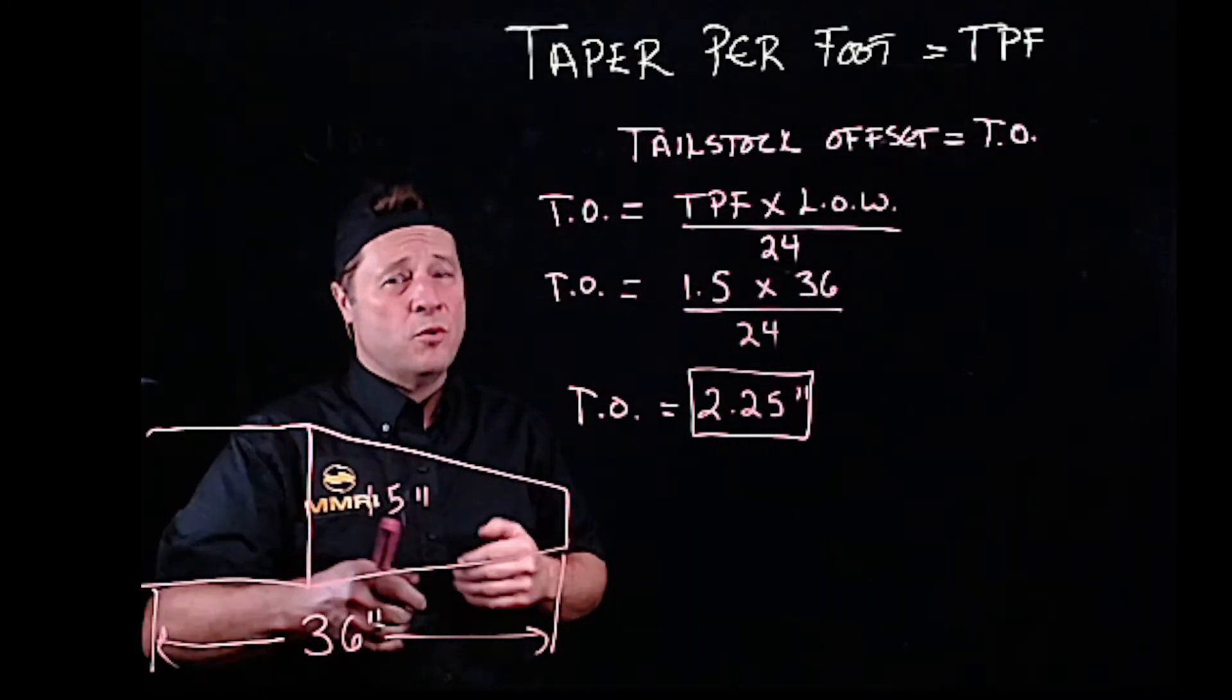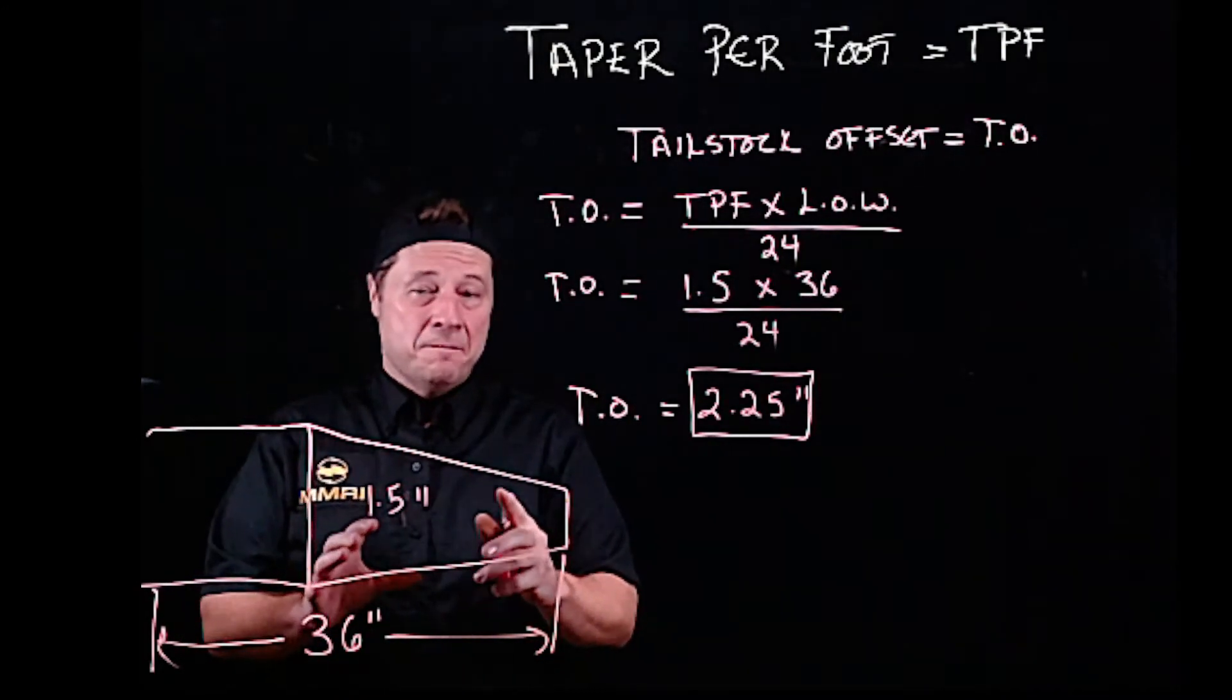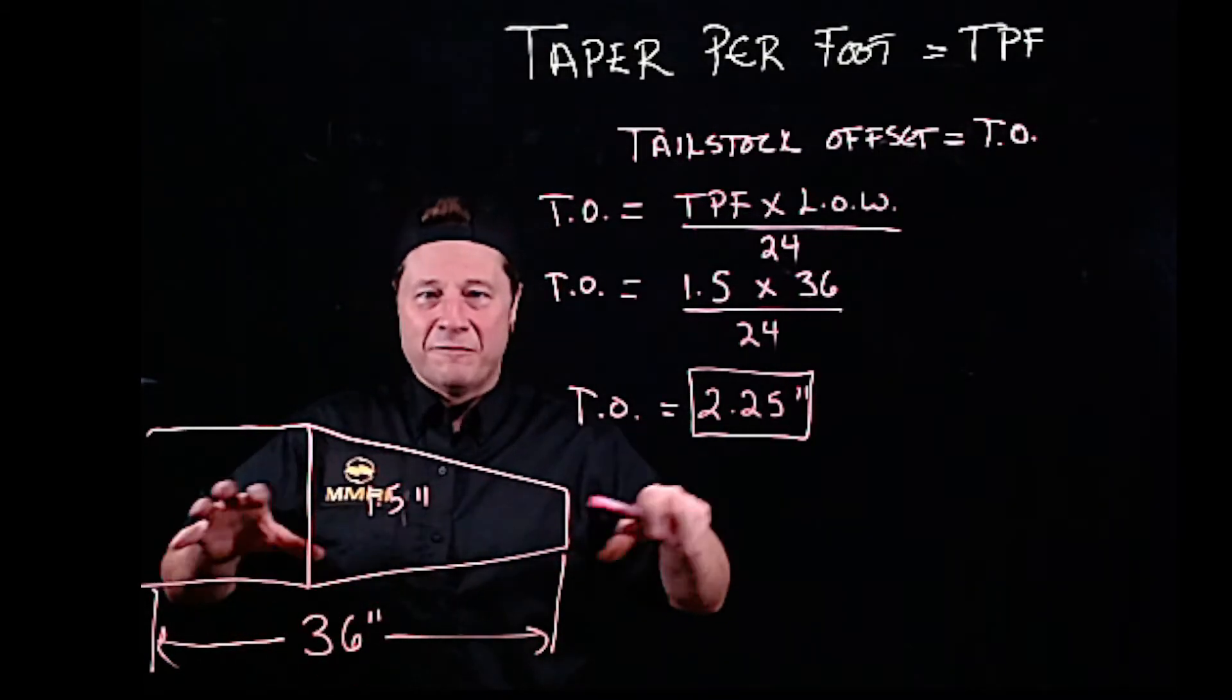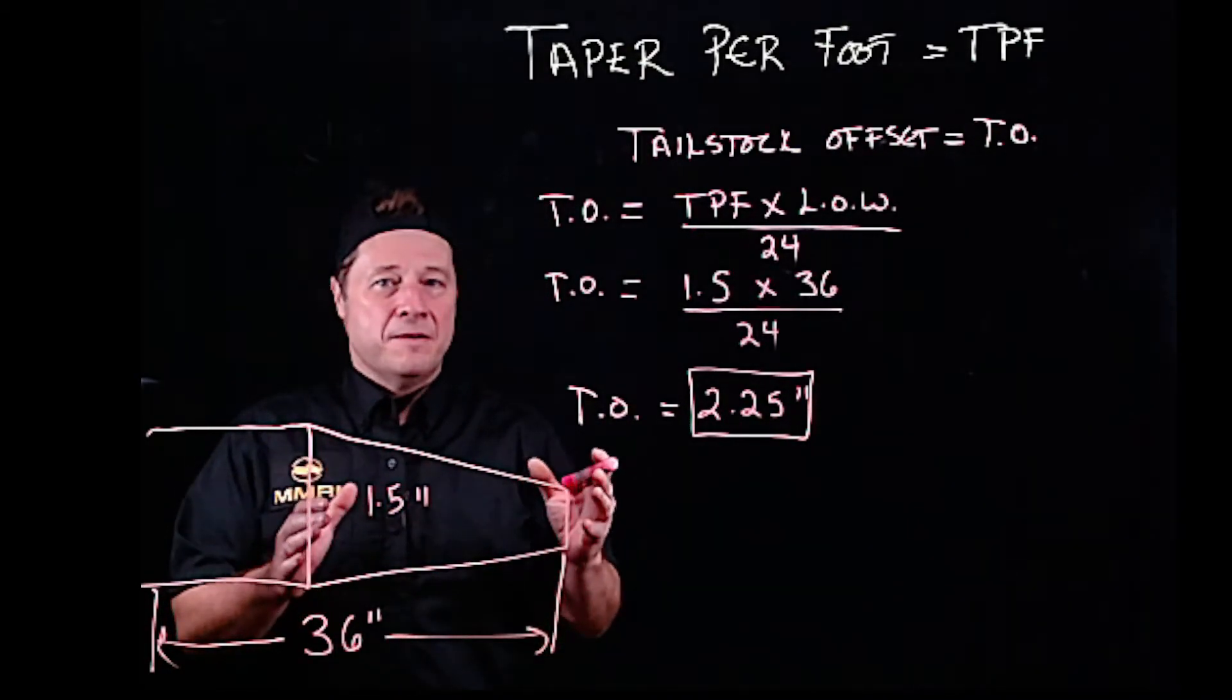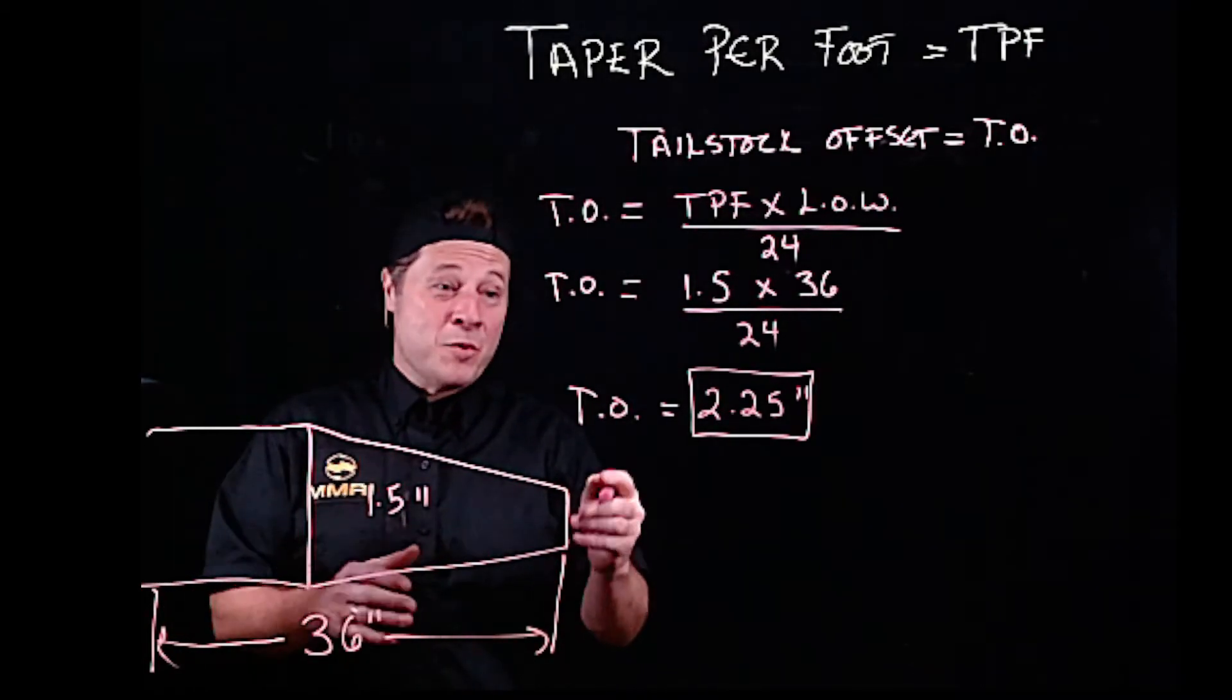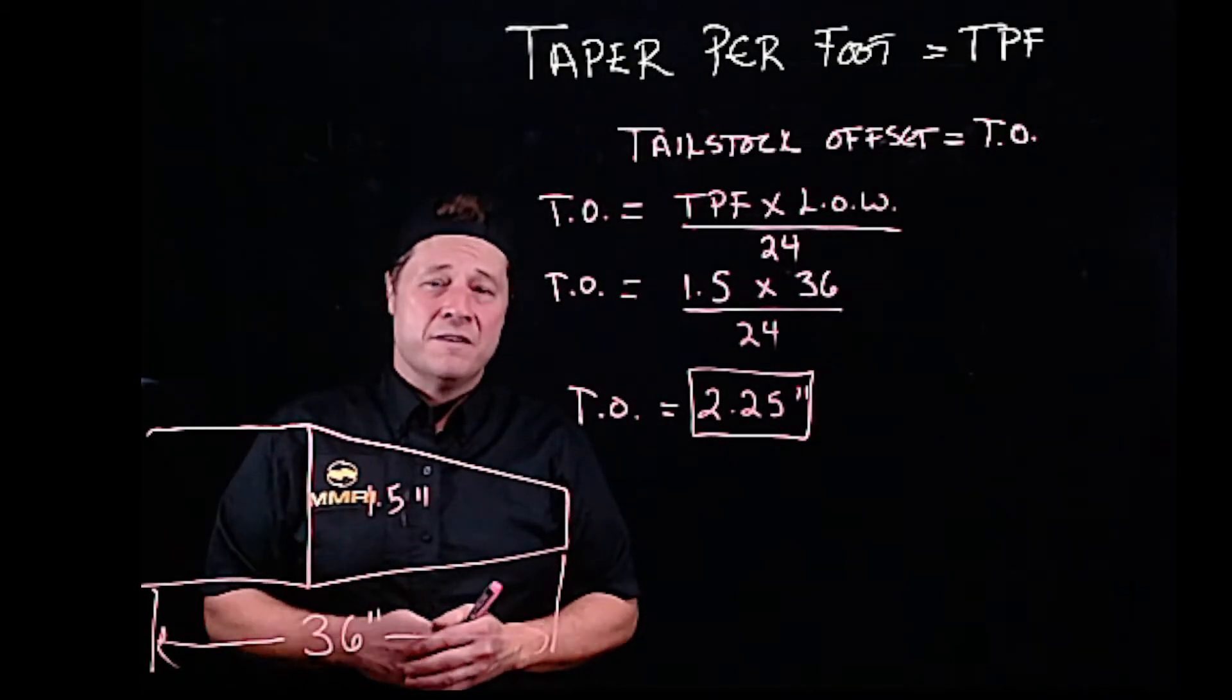Sometimes what we need to do is make sure that before we do a setup, before we start loosening bolts and trying to do the physical setup, let's do our math first. Let's make sure that before we do all of the work in setting up for this taper, that we can actually move the tailstock the distance that we solve. If not, then we have to find another way to cut the taper.